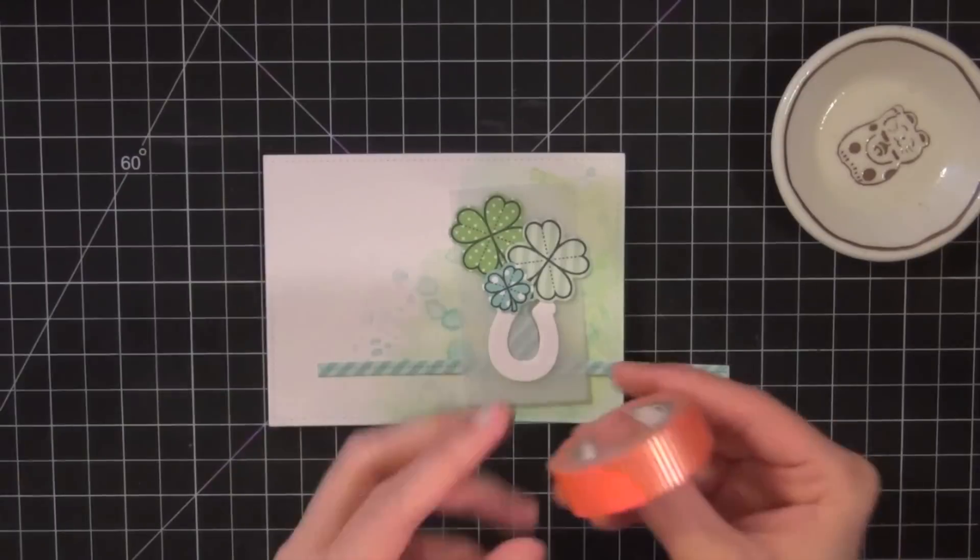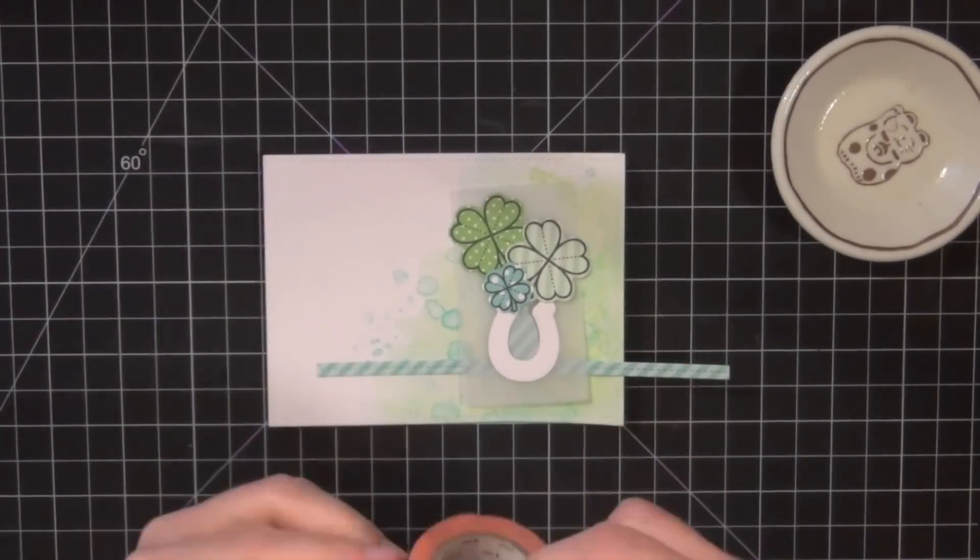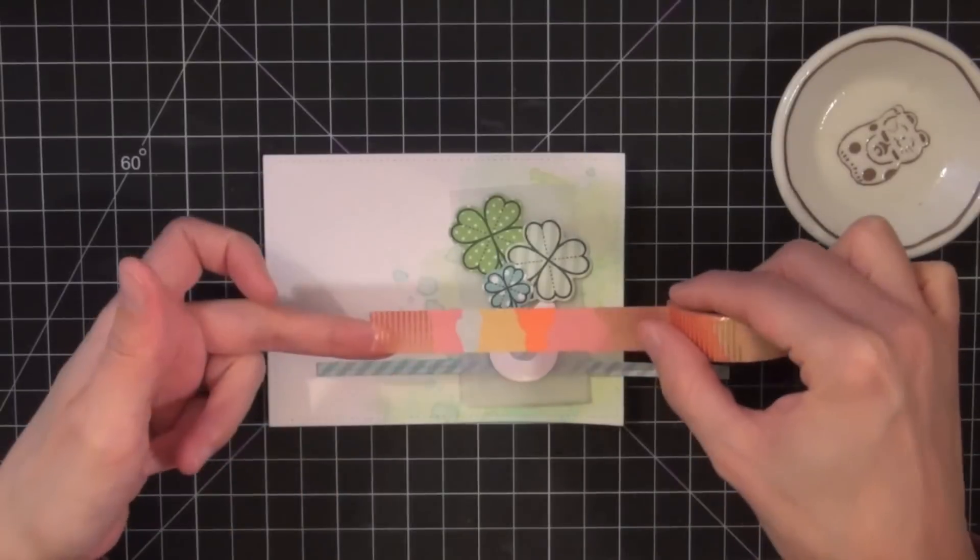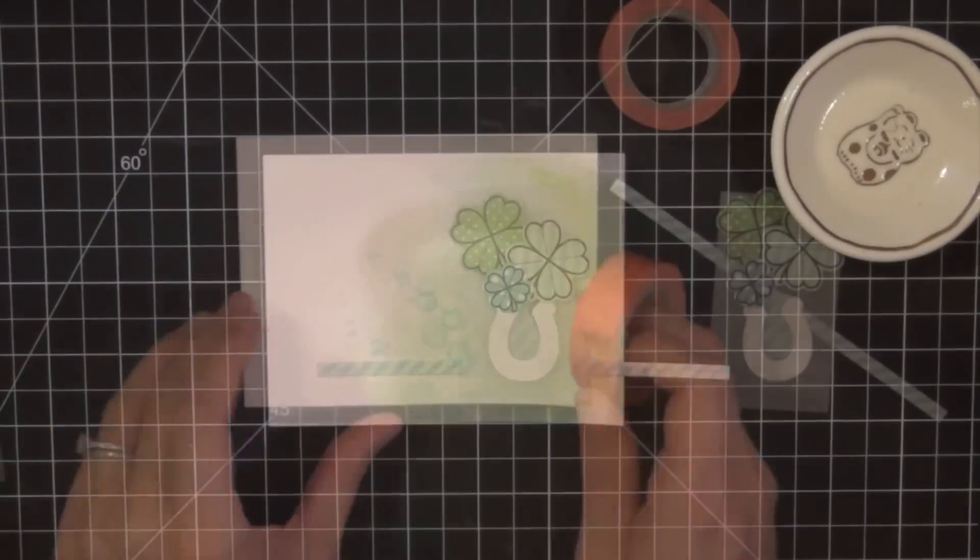I cut it out of some stripe patterned paper and then I thought the card needed a little bit of color a little bit different than the blues and the greens. So I had this washi tape lying around I thought it would be a nice complement to the cool colors.